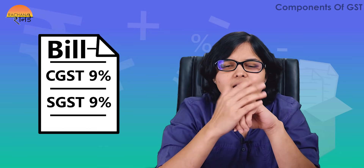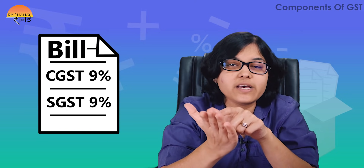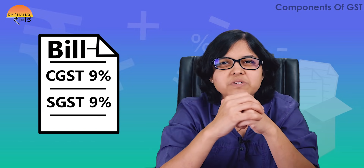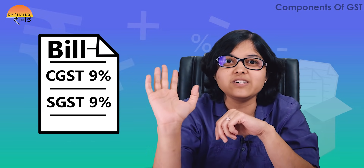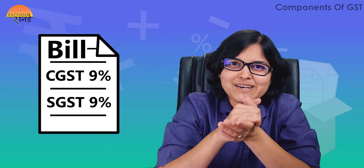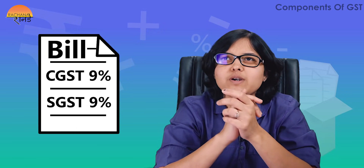At a restaurant the day after GST was introduced, the customer next to me saw the bill showing CGST at nine percent and SGST at nine percent. He said, 'I listened to Modiji's speech and he said one tax, one nation — so either charge me CGST or SGST, I'm not paying both!' This confusion highlights the question: why is there talk of one tax when there are multiple components?